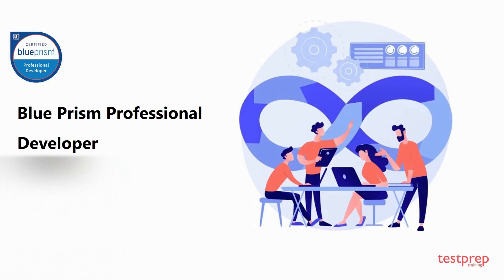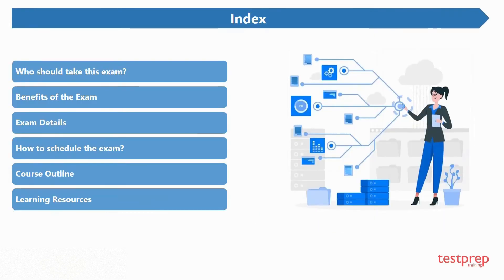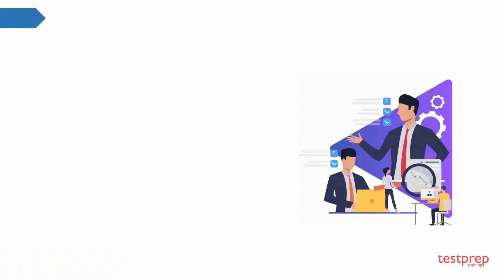In this video we will discuss how you can prepare for the Blue Prism Professional Developer certification. This is one of the most powerful certifications in the network of robotic process automation. Here you can see the list of topics we are going to cover. We will start with the basic information required to begin your preparation and then move on to the study materials and important topics.